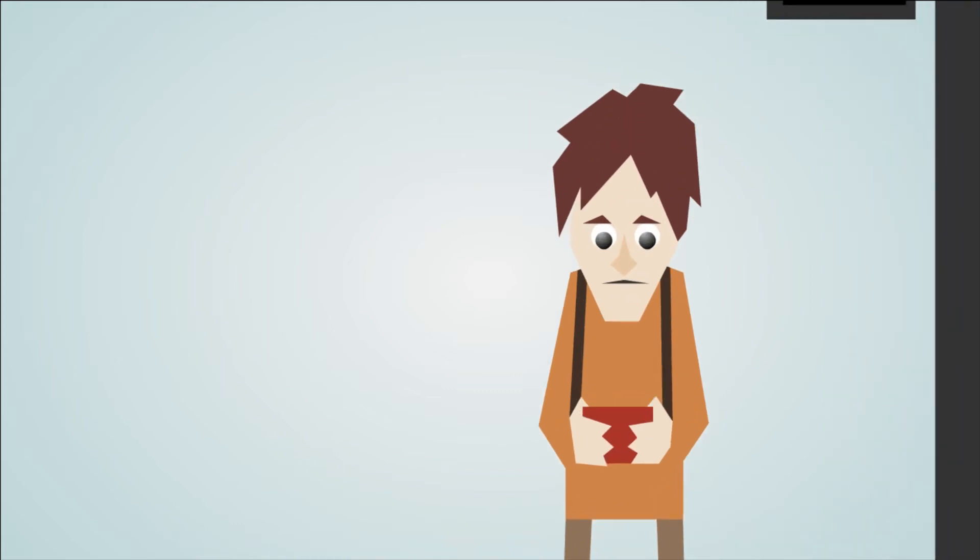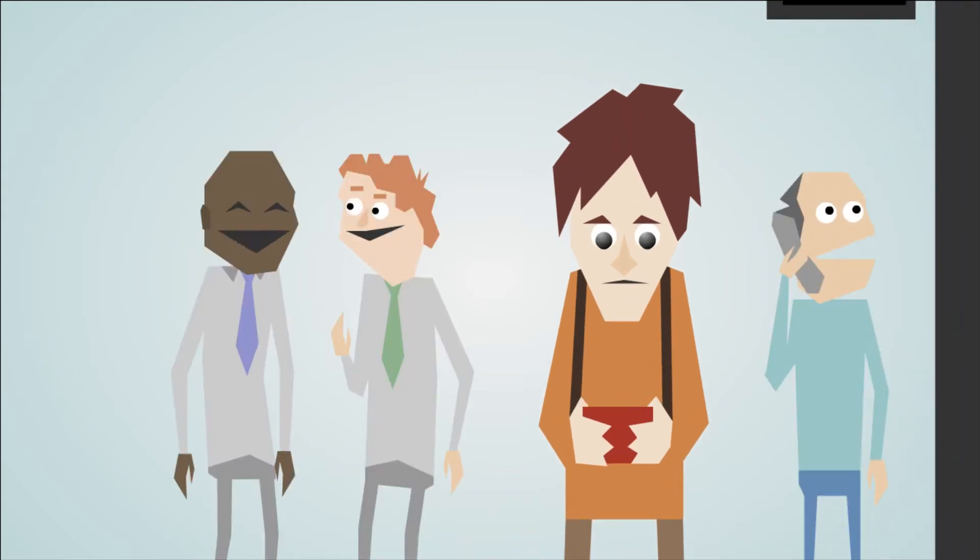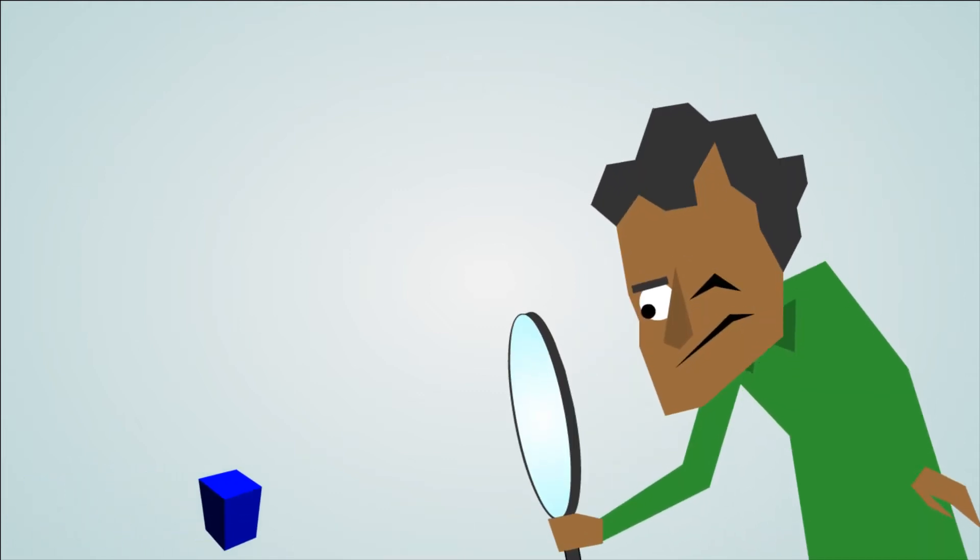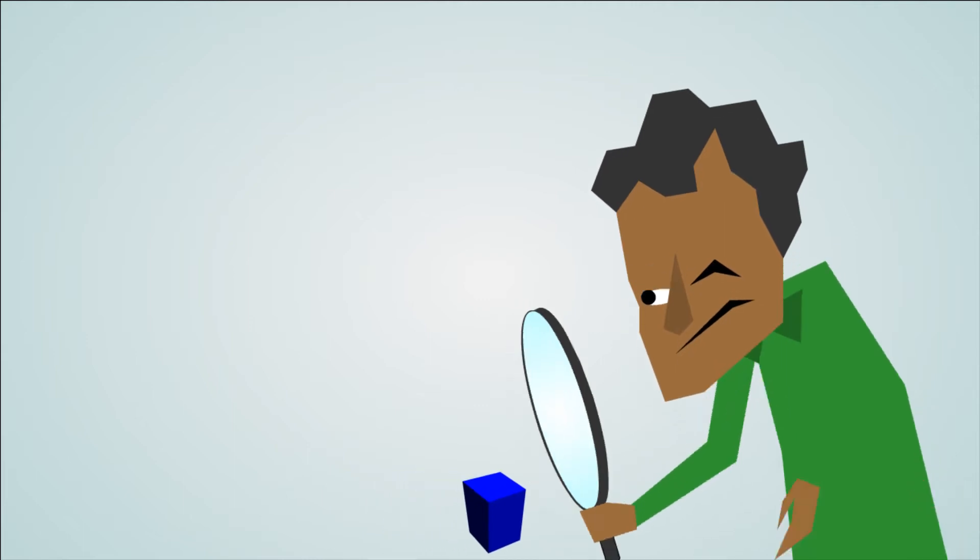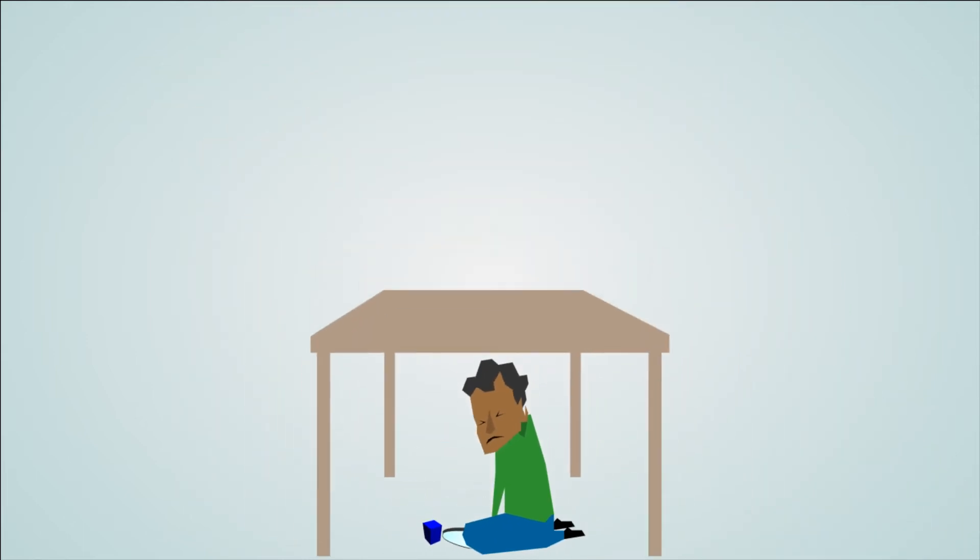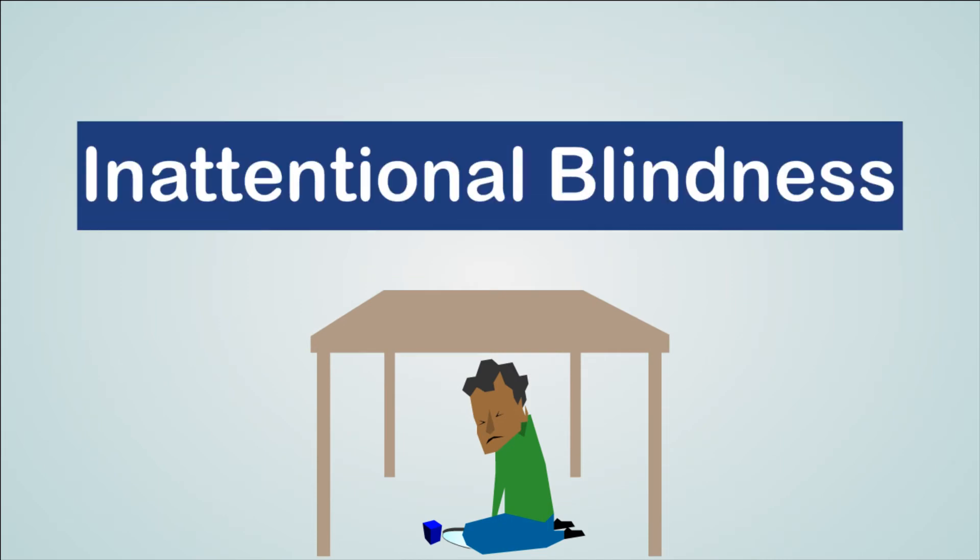In life, being focused helps us ignore distractions, but this focus can cause us to overlook unexpected opportunities. Similarly, when we focus our attention on finding a particular object, we often fail to notice other unexpected objects, a phenomenon referred to as inattentional blindness.